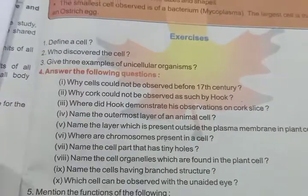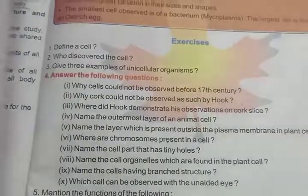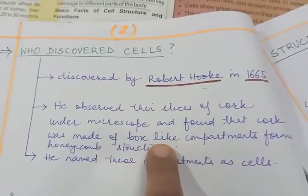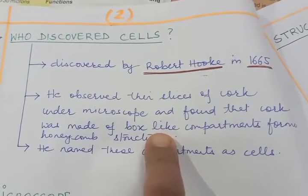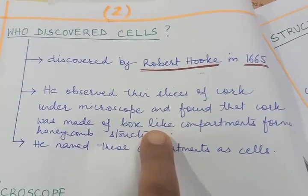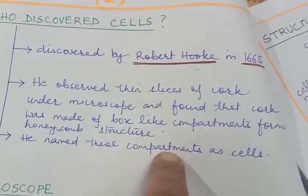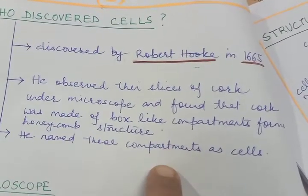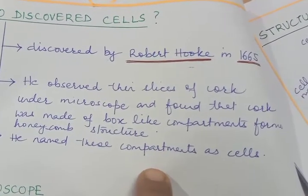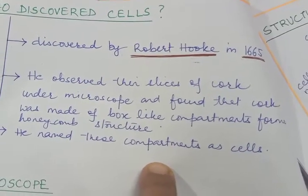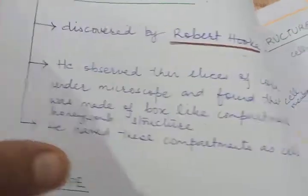Next question: who discovered cell? This is also in your notes. Cells were discovered by Robert Hooke in 1665. He observed thin slices of cork under a microscope and saw compartments like a honeycomb. He named these compartments as cells. This is your answer number 2.